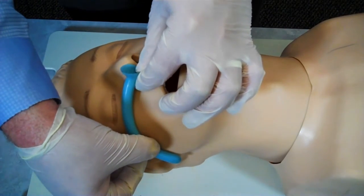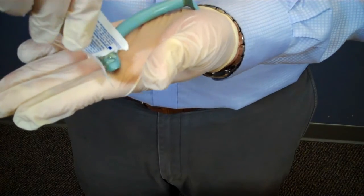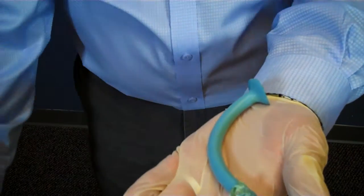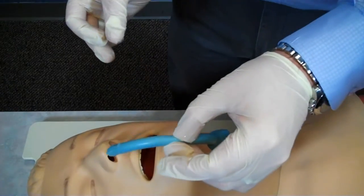I measure the nasopharyngeal airway from the tip of the nose to the earlobe. I then lubricate the NPA with a water-soluble lubricant and insert the airway with a bevel towards the septum.